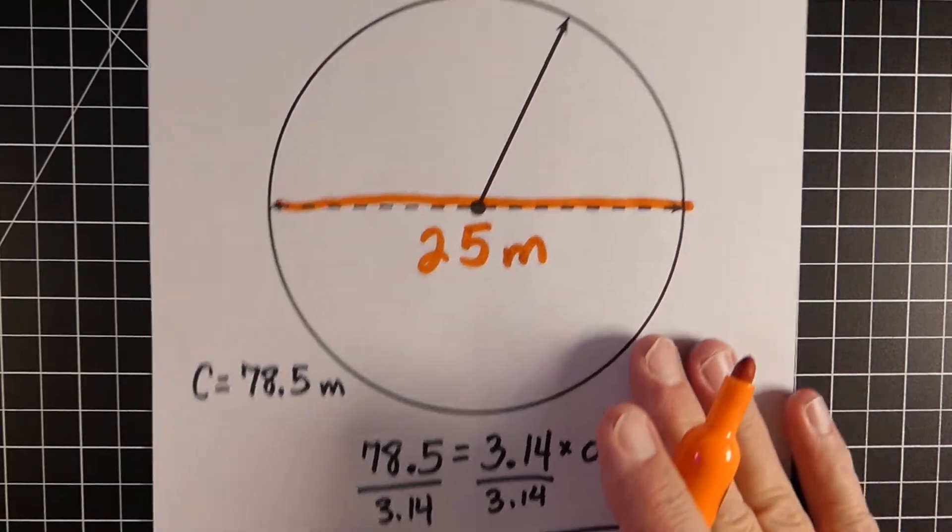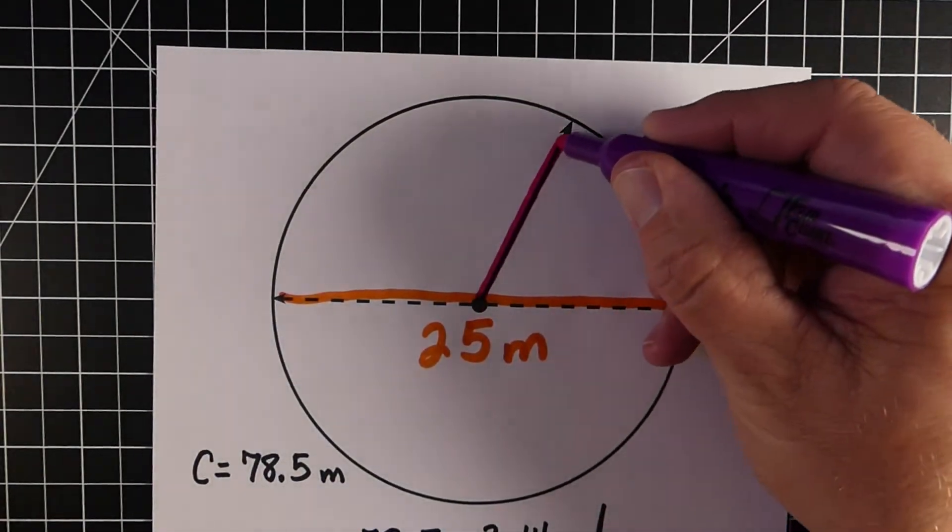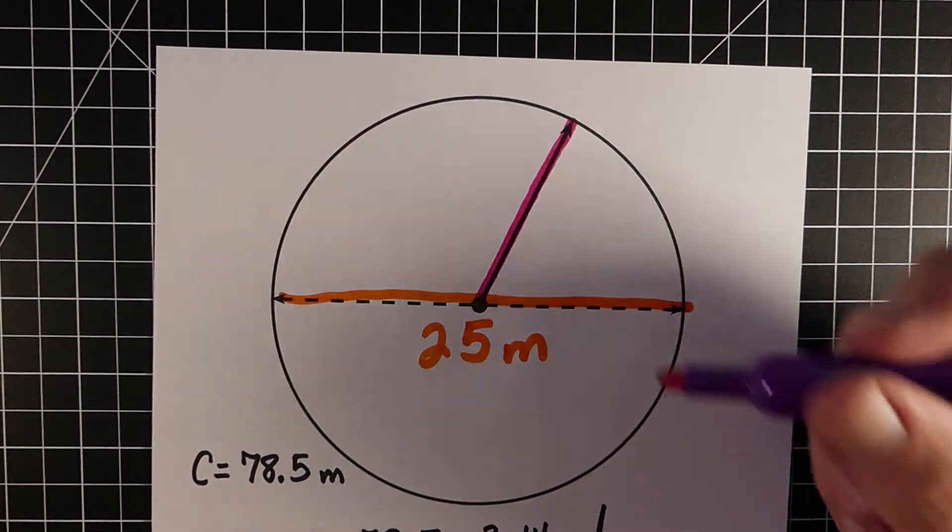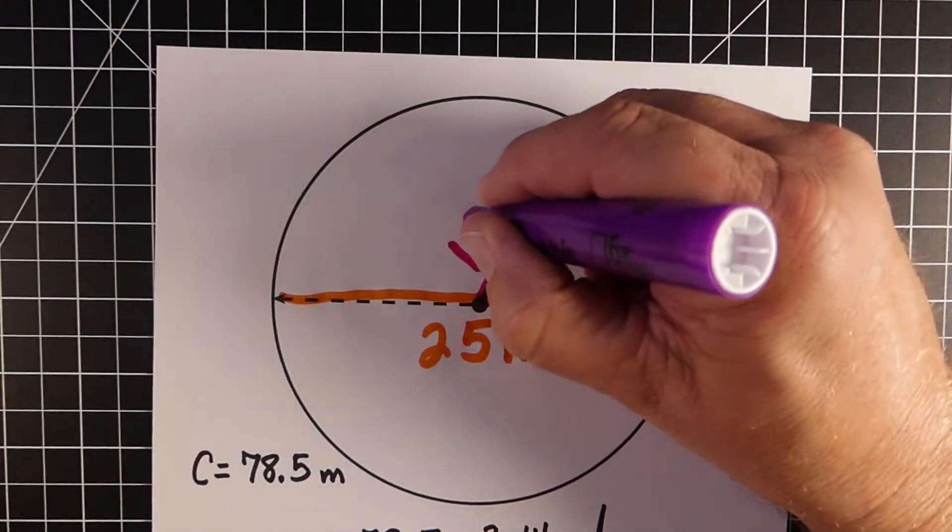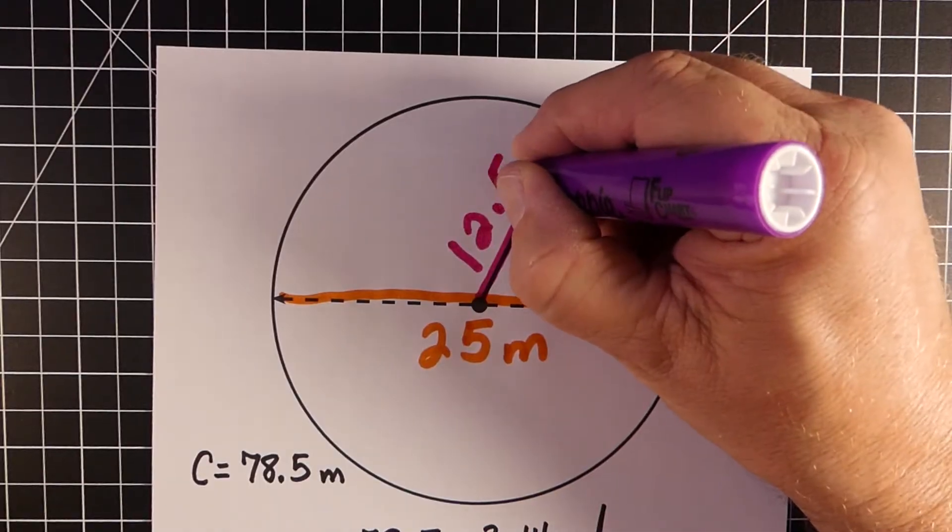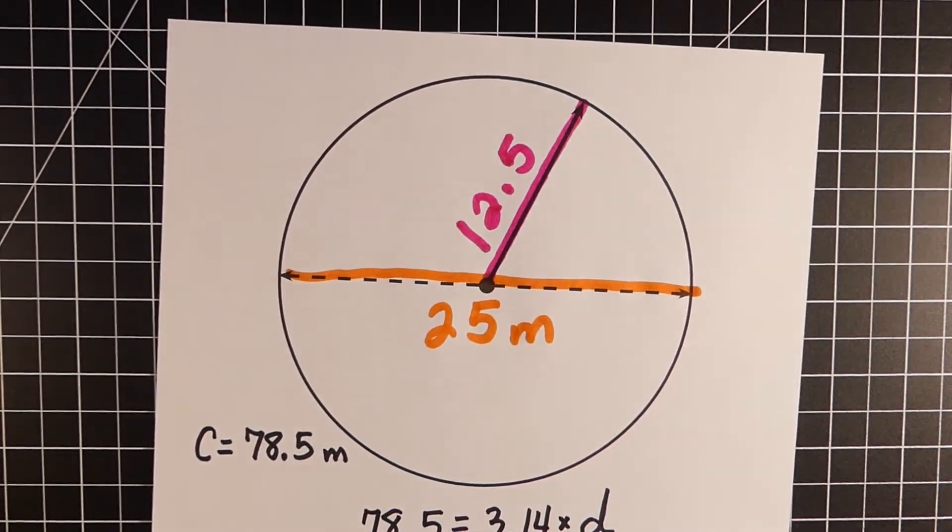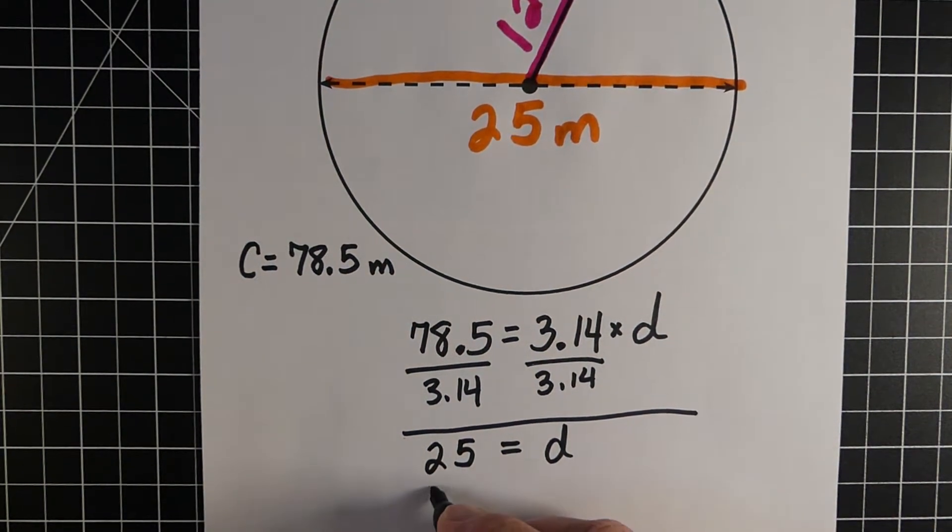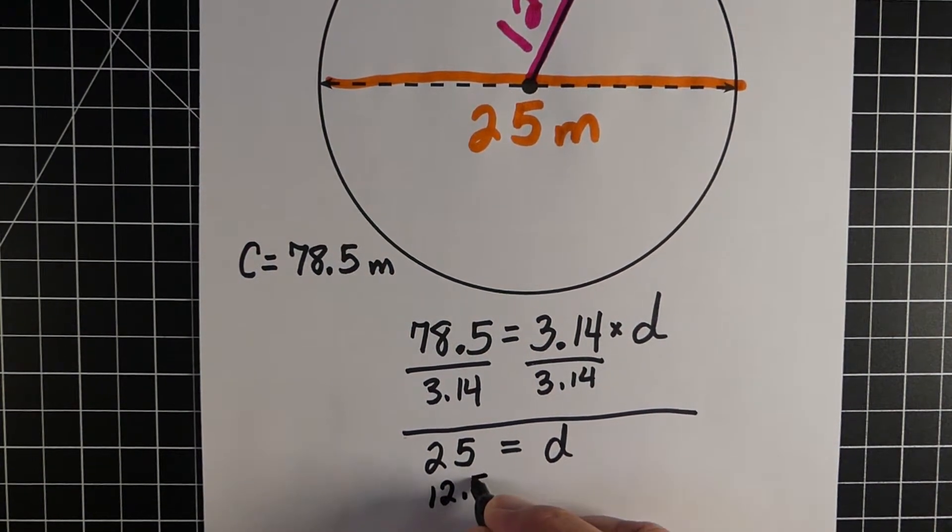And again, just like in example number 1, our radius is going to be half that, because it's just half the distance across. So you would just take 25, you would divide it by 2, and you're going to get 12.5 meters. So that would be the radius. So when we look down at our two answers we're looking for, we already know 25 was the diameter, and 12.5 is the radius.